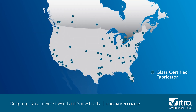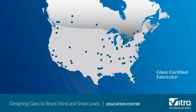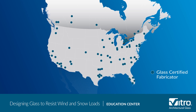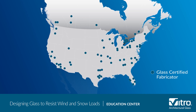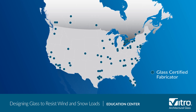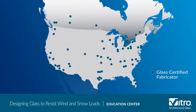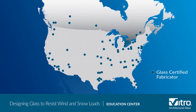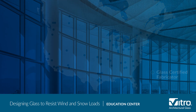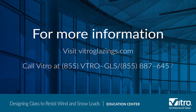Now that you know how these complex calculations work, you'll be happy to know that any Vitro certified fabricator can do these calculations for you. Visit vitroglazings.com to find a certified fabricator near you. For more information about wind and snow loads or to ask any glass question, please visit vitroglazings.com or call 855-VTRO-GLS, 855-887-6457.